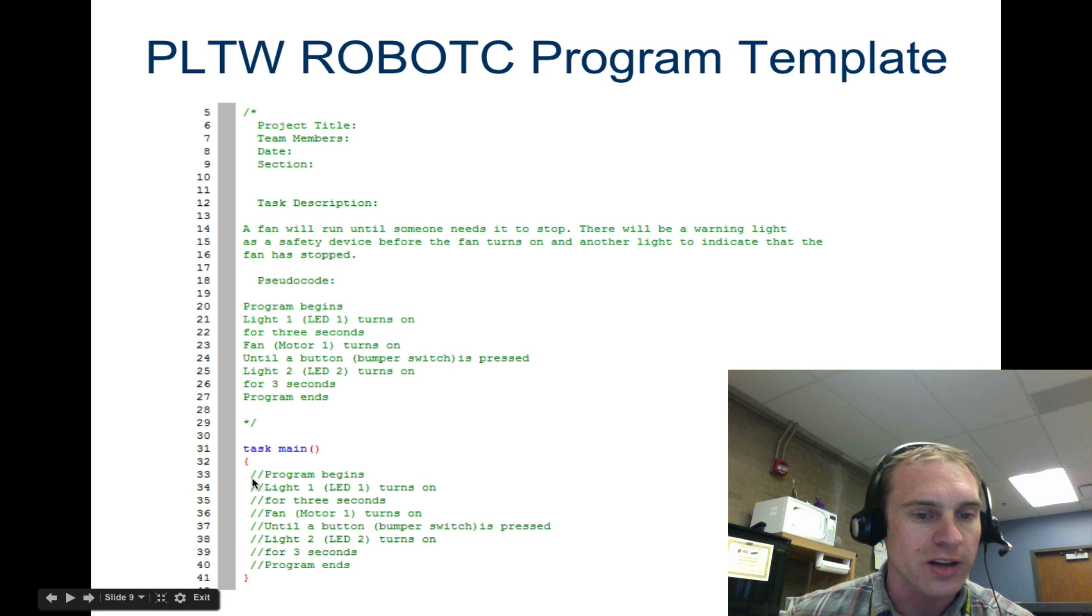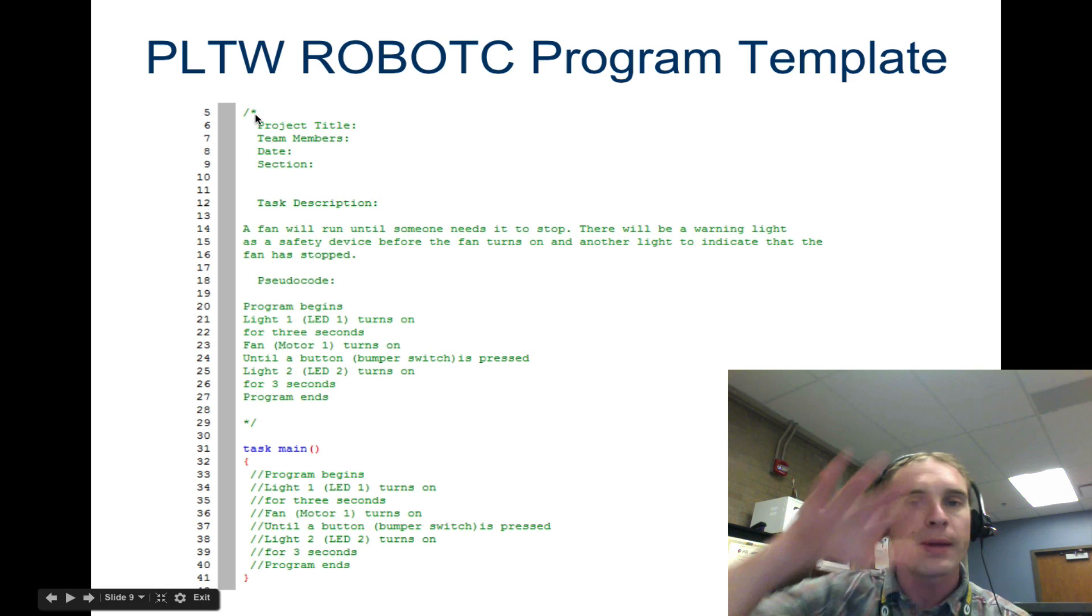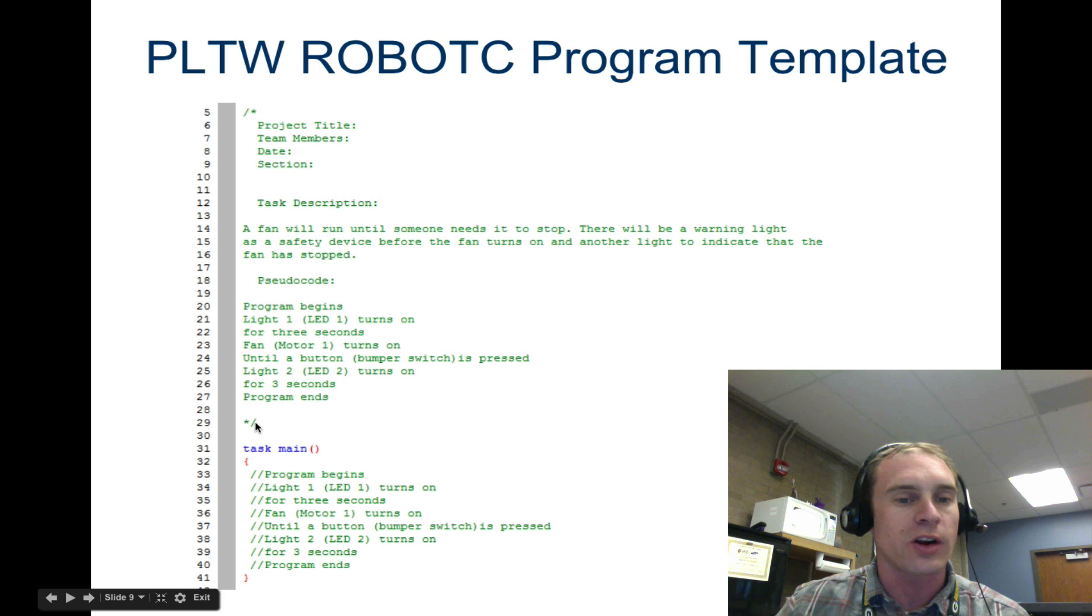All right. So here is an example of this. Here's your task description. Fan will run until someone needs it to stop. There's a warning light for safety before the fan turns off and another to indicate the fan has stopped. So your pseudocode, we just read through all this. And then what is a great thing to do here is you take your pseudocode, you copy it, and you paste it into your task main. And you can see that there's a double slash. Double slash means it comments out. That means it's just not reading any of that. It's just notes for you. And the slash star will comment out all of it until you get to the star slash.